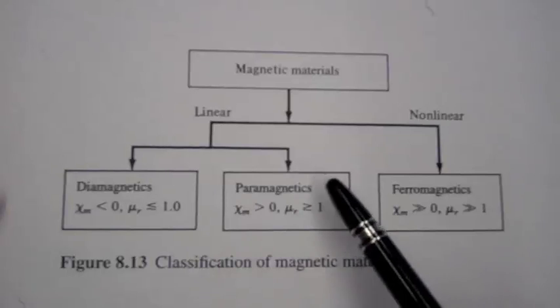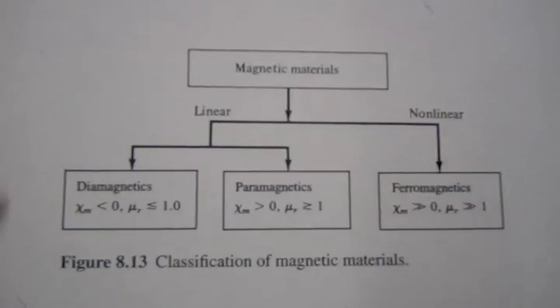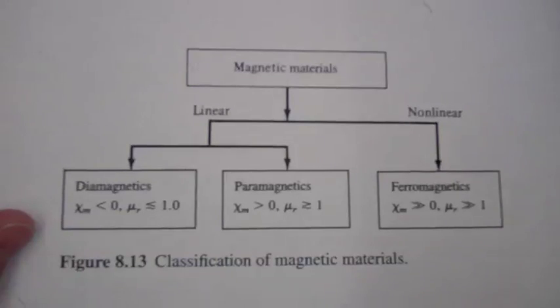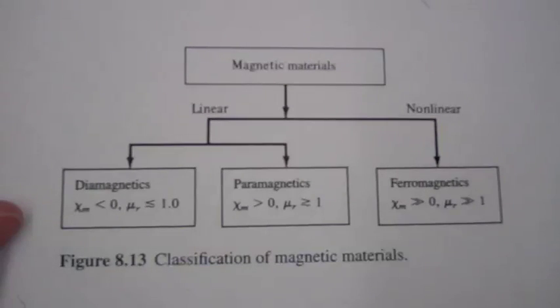There are the paramagnetics and the diamagnetics. So a paramagnetic material is weakly attracted to a magnet but the force of magnetic attraction is very weak and much smaller than the gravitational force so it's not readily observed. An example would be aluminum.